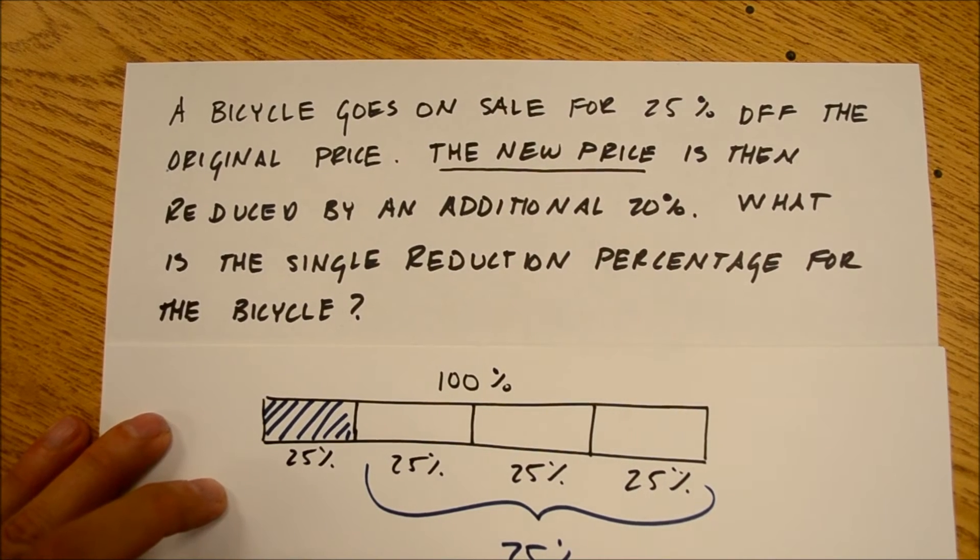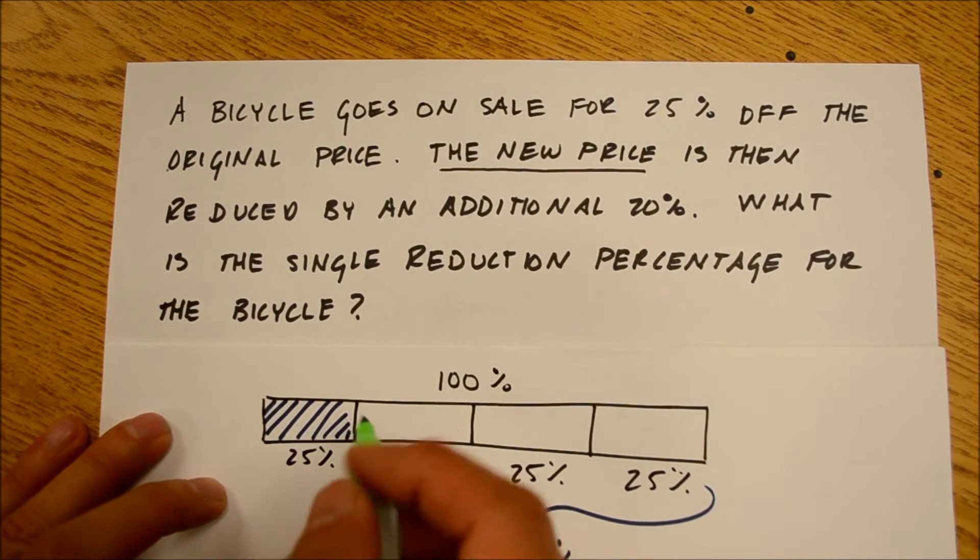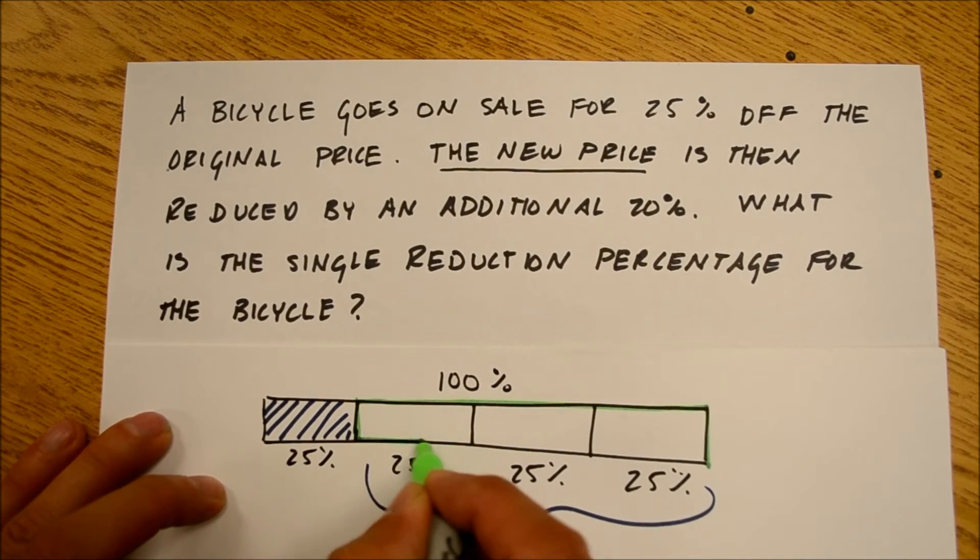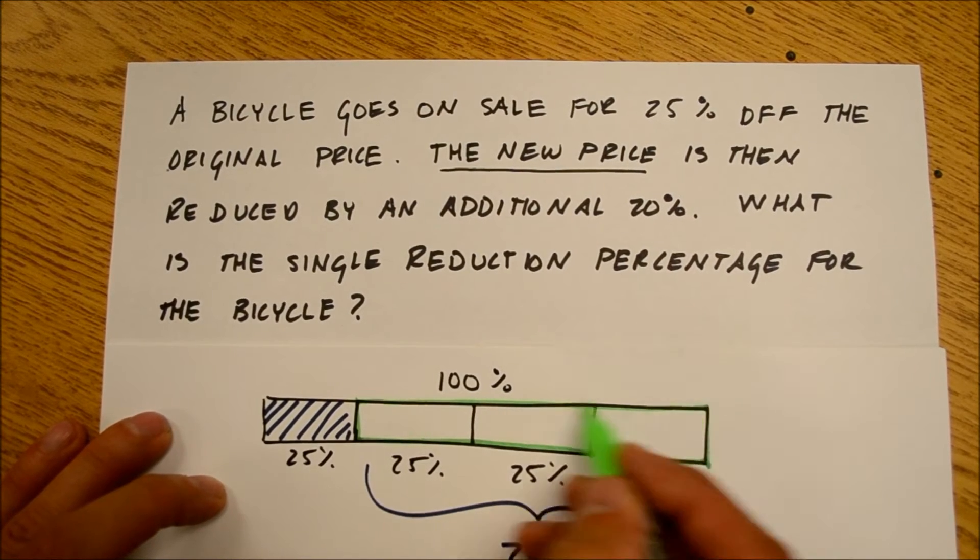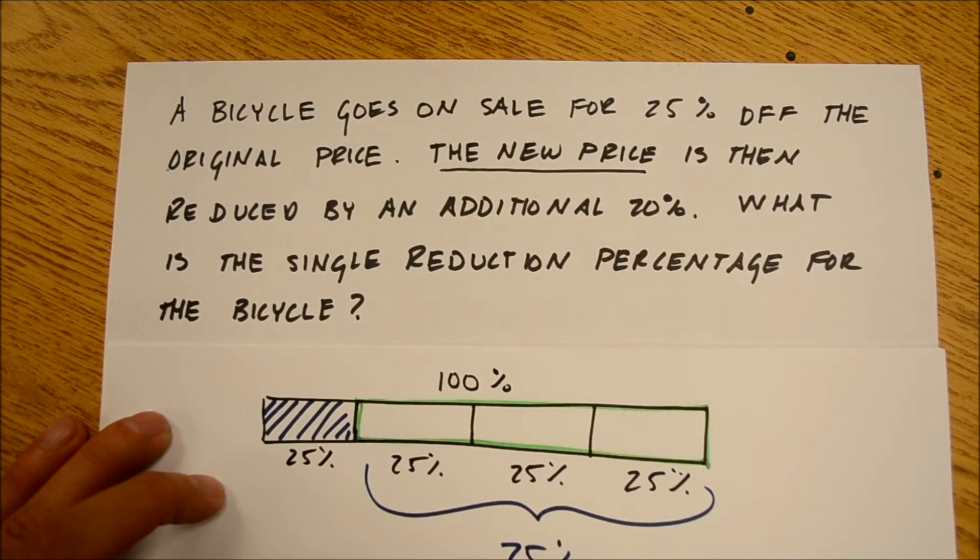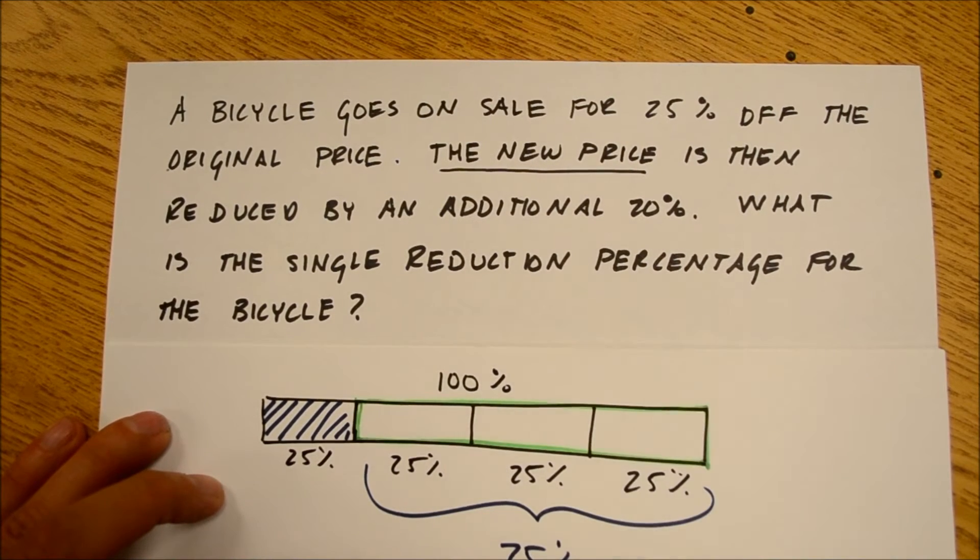Well, the sticking point. Now we're at the sticking point. We have this new price. How do we take 20% of that? Well, let's use this as our new price. Is this square right here 100% of our new price? Yeah, it is. That's 100% of our new price.